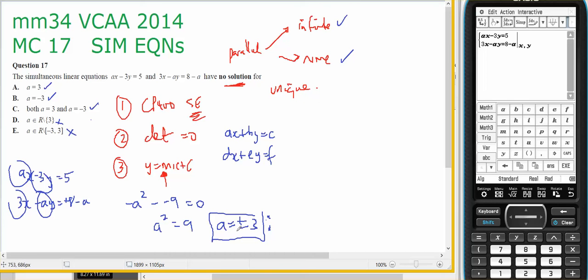How do I check it? I substitute the values in. So if I make a equal to 3, I would get 3x minus 3y equals 5. This is a equals 3. And I would get 3x minus 3y equals 5. So that is definitely identically the same. So that's infinite number of solutions.